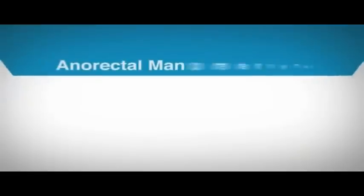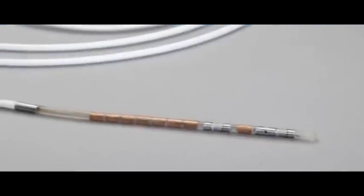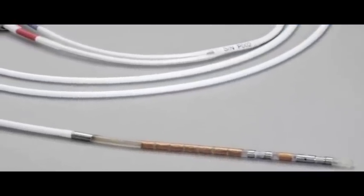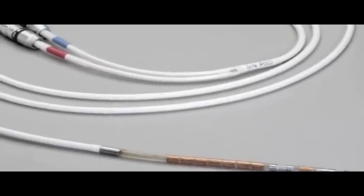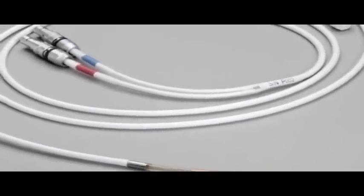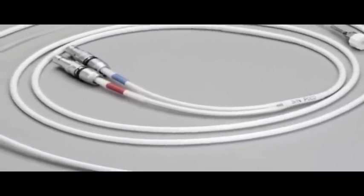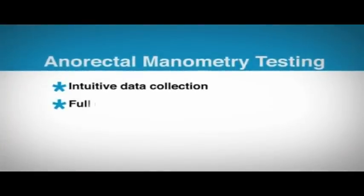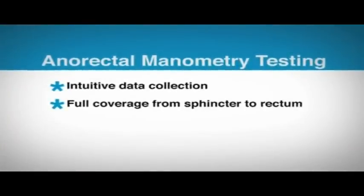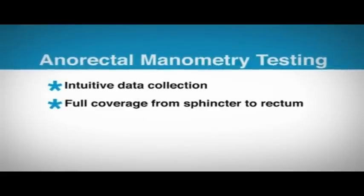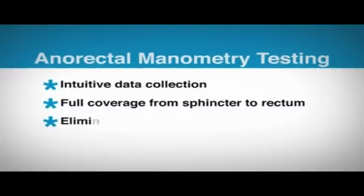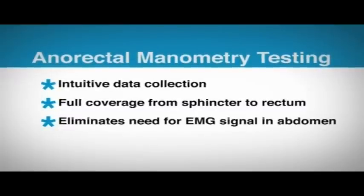The ManoScan high-resolution tactile technology also provides for simple and efficient anorectal manometry testing. With many of the same features and benefits as the ManoScan esophageal software, the ManoScan anorectal software allows for similarly intuitive data collection. The probe's continuous sensing provides full coverage from the sphincter to the rectum, eliminating the need for repositioning. These balloon sensors in the rectum also do away with the need for an EMG signal in the abdomen.